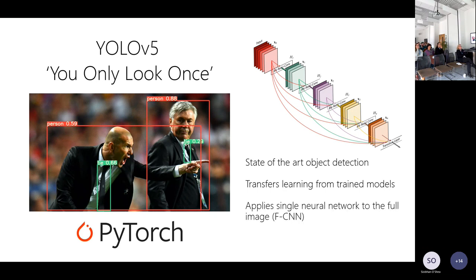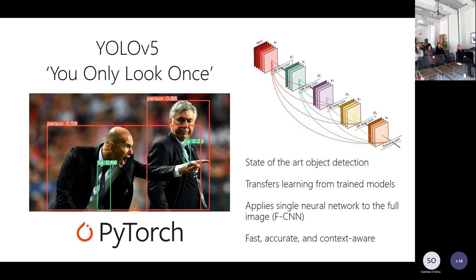You build your own data on top of that so you can detect exactly what you want. What makes YOLO quite special is that it applies a single neural network to the entire image, whereas many other models apply multiple small networks to different regions. Using a single network on the whole image means it's accurate, but it's also context-aware: it can use the presence of one thing in an image to help determine the probability of other detections.